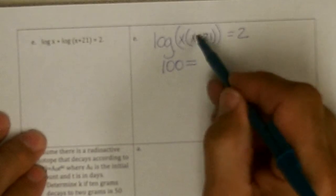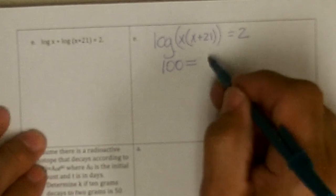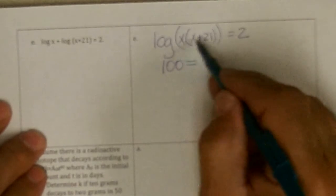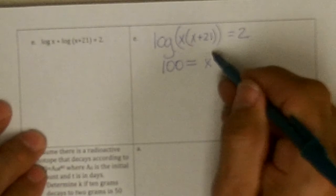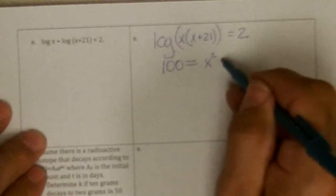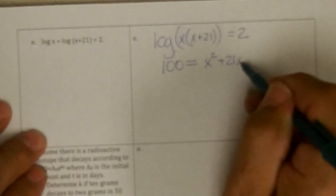To what power do I take 10 to get this? 10 to the 2 equals this. So, 10 to the 2 is 100, equals x squared, multiplying this out, plus 21x.